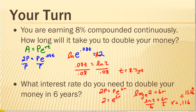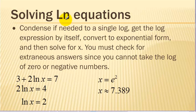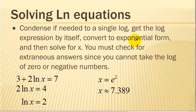Now let's move to logarithm equations — really any kind of log equations. If there's more than one log in the expression, we may need to condense it to a single log using our logarithm properties. We want to get the log by itself, then convert it to exponential form and solve for x. Since the domain of the log function is limited — we can't take the log of negative numbers or zero — there's a possibility of getting extraneous answers, just like when solving square root functions. So we have to check and eliminate any extraneous answers.